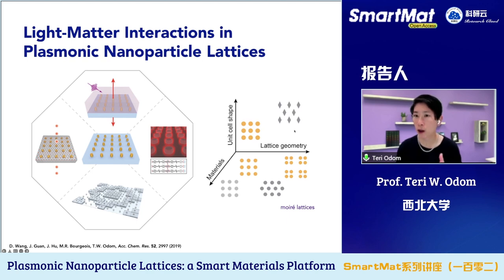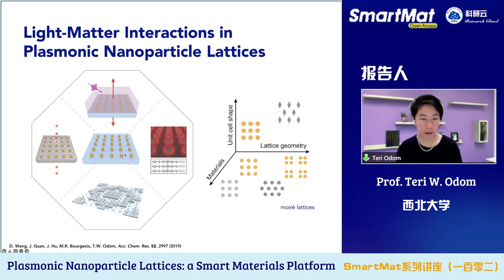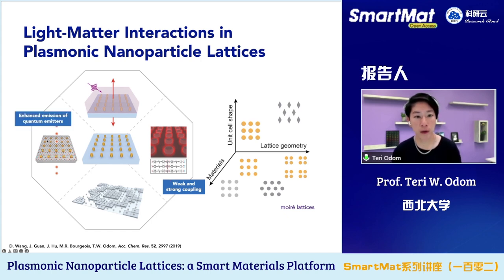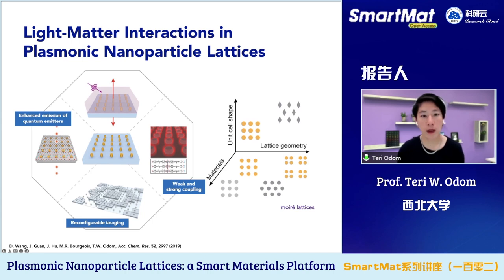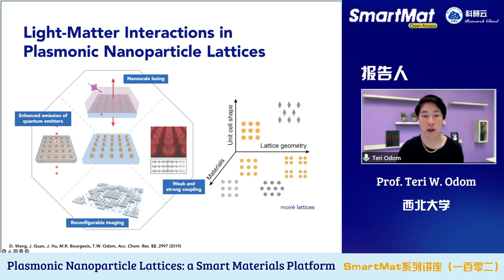Once we have these fundamentals carved out in building block space, they can be put into lattices. This is an example of a square lattice. The square lattice can interact with metal-organic framework materials and show weak and strong coupling. These types of lattices can be integrated with two-dimensional materials, such as hexagonal boron nitride, where we can achieve enhanced emission of quantum emitters, including single photon emission. We can also change the local dielectric environment around these particles through reconfigurable imaging, and combine these structures with gain material to achieve nanoscale lasing. I argue that along these platforms, these are responsive but not yet smart — but we should start here as some of the building blocks.